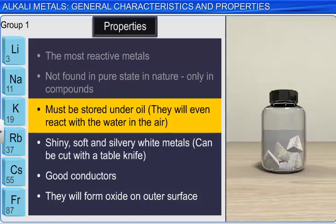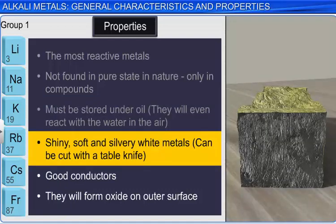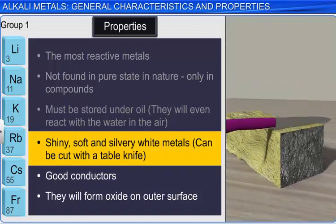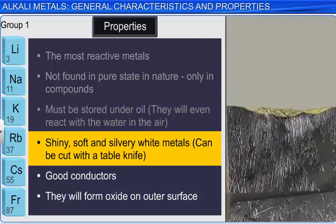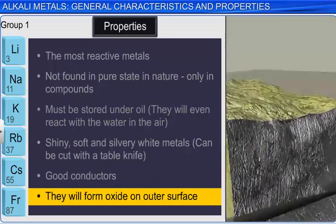The alkali metals are all shiny and silvery in appearance. They are so soft that they can be cut with a table knife, which is often surprising to students. Like all metals, they are good conductors of both heat and electricity, as shown in the diagram. They will form a dull oxide layer on their outer surface when exposed to air. This layer can easily be cut away to reveal the shiny interior.